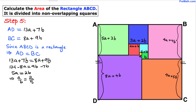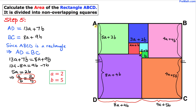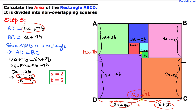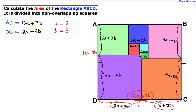So we got 5a equals 2b, which means a over b equals 2 over 5. We have a proportion, so a is going to be 2 and b is going to be 5. Now we know the total length of side AD is 13a plus 7b, and the side length of CD is 12a plus 9b.